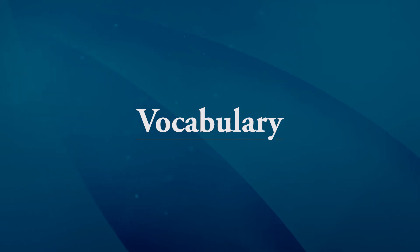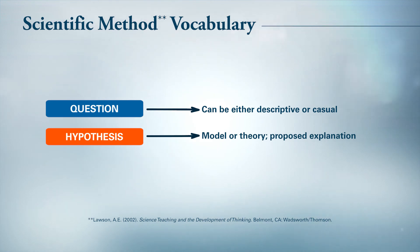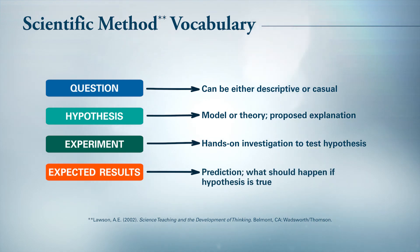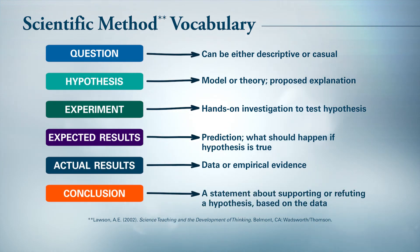Before you have your student scientists join us, let's review some key terms. Scientific questions usually ask for either a description of a phenomenon or a cause for it. A model is a question's proposed answer — it can also be called a hypothesis or theory. Experiments give scientists chances to test their proposed answers, and it's always a great idea to figure out beforehand what should happen assuming one's proposed model works. Resulting data can be observations or numbers that scientists collect as measurements. Finally, conclusions result from a comparison between expected and actual results: a match means the model is supported, while a mismatch means the model is refuted and in need of revision.